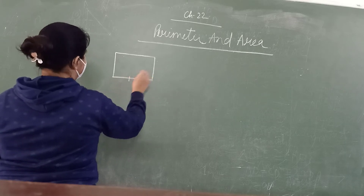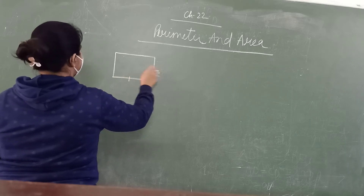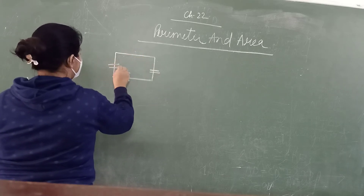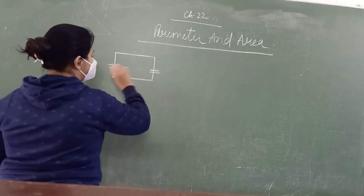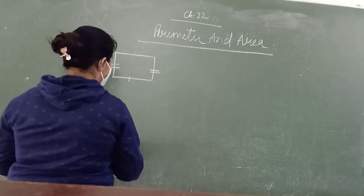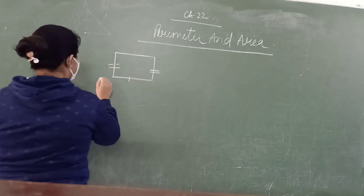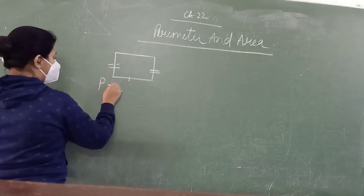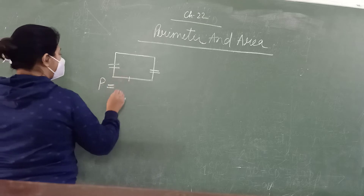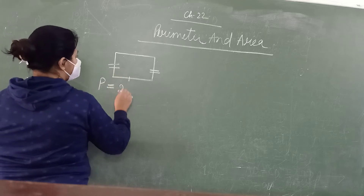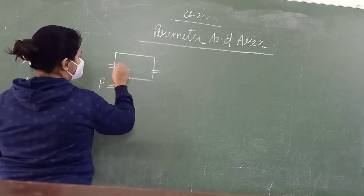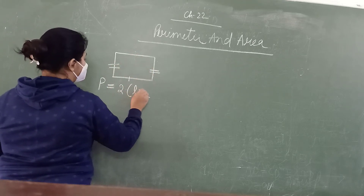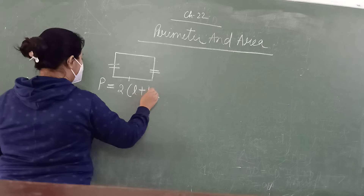For example, we have a rectangle. The sum of all these sides is called the perimeter. So, the perimeter of the rectangle is: we have two lengths and two widths. So, the formula is 2 into (L plus B).